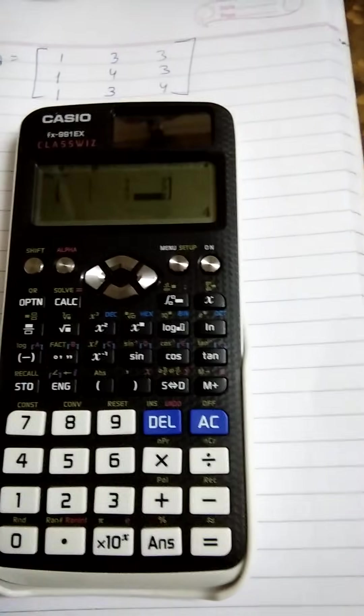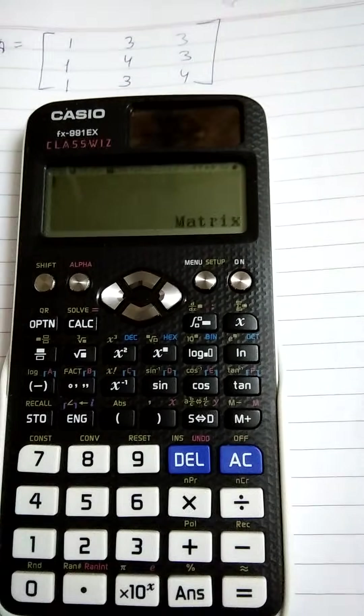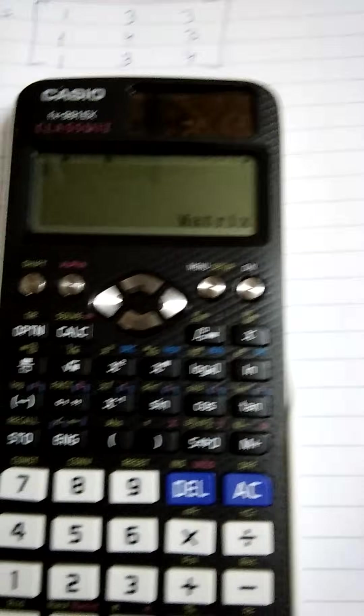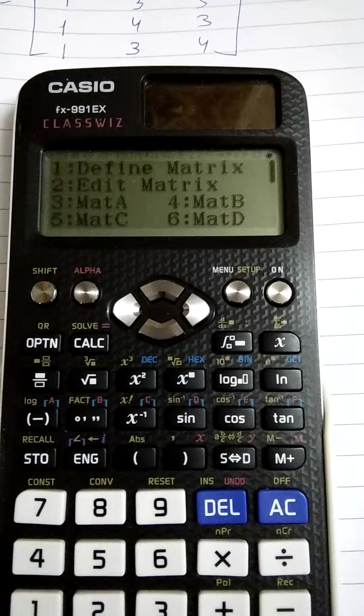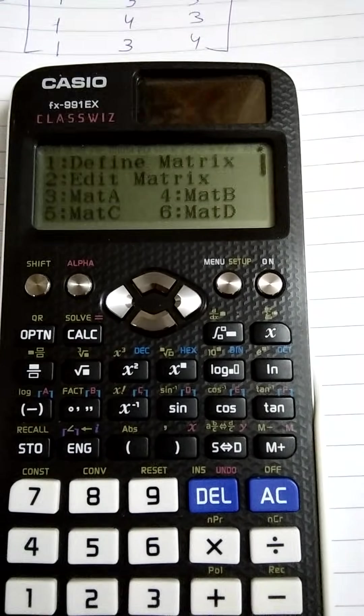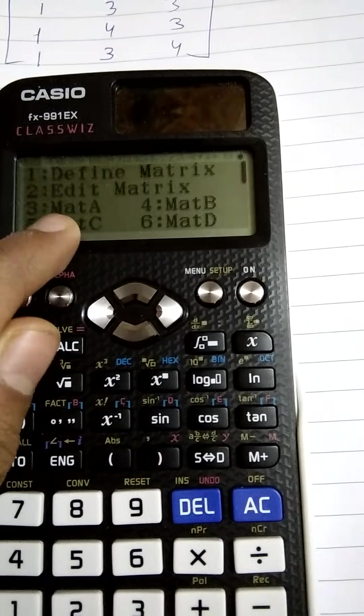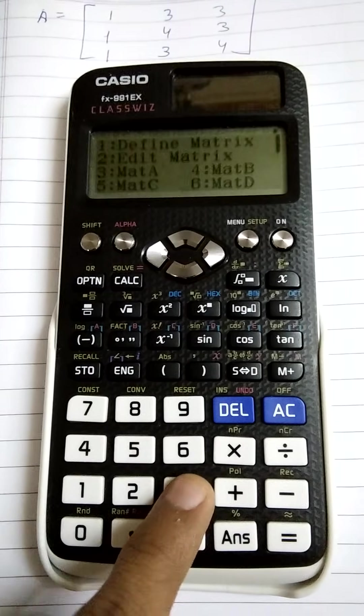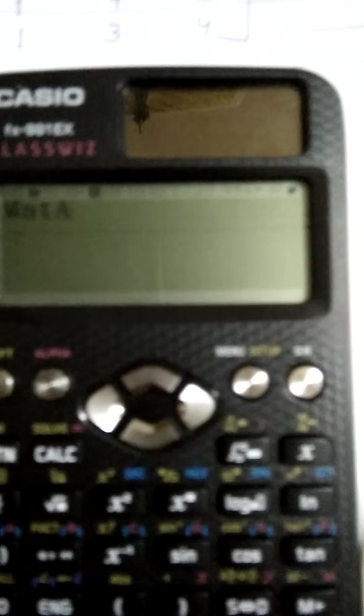Now just simply press AC button. The matrix word will get displayed out there. Now press the option button and since we have chosen for matrix A, you can see the matrix A is written out here. Option number 3, just press 3. Matrix A has got displayed out here, can you see this? Matrix A, Mat A means matrix A.